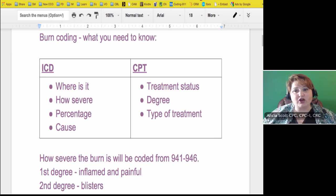Burns for how severe they are will be coded from 941 to 946, so you don't have very many codes to choose from. This is going to be first, second, and third degree. If you don't know the difference, it's real simple.